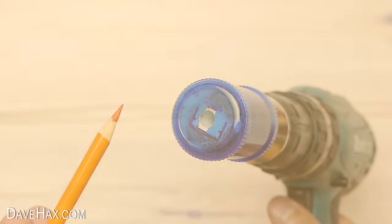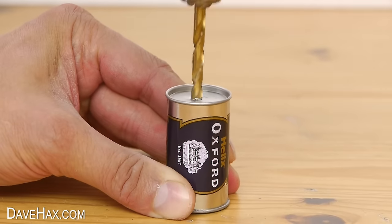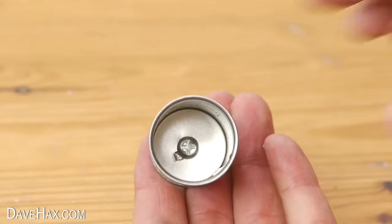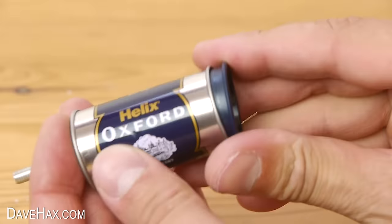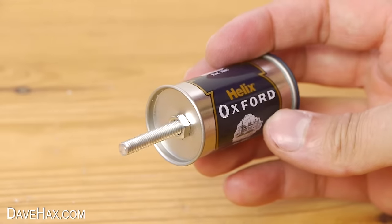I also made one out of this metal canister which I made in the same way. Although I didn't need to use washers because the metal base of the canister was strong enough for me to tighten the bolt directly onto.